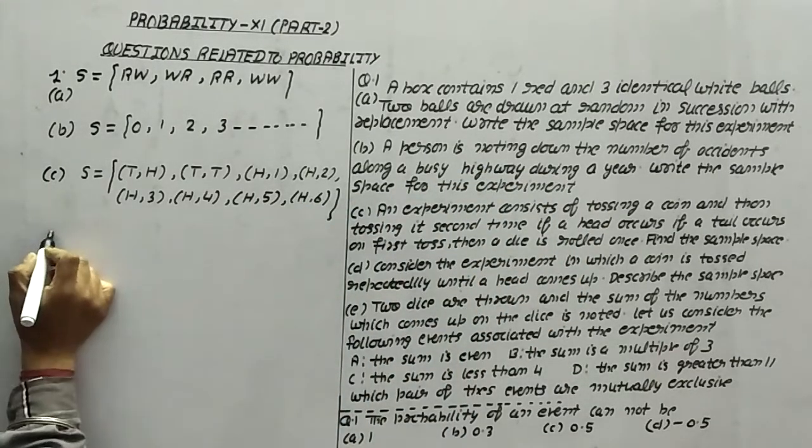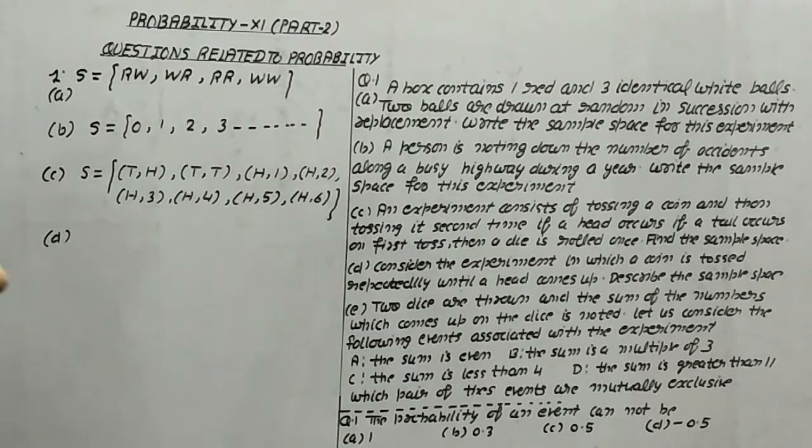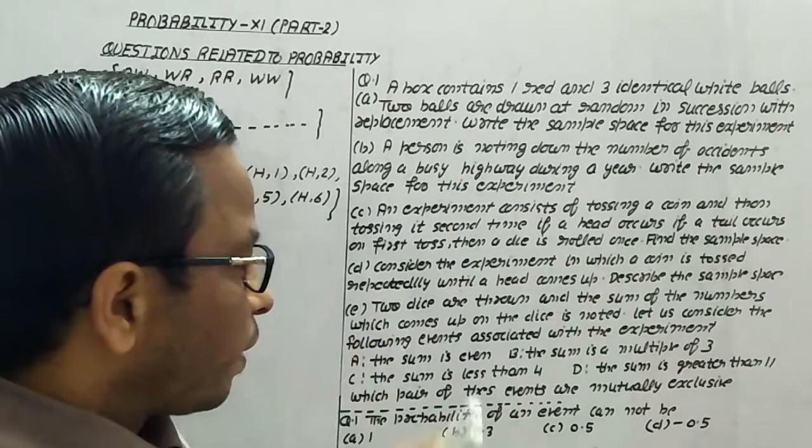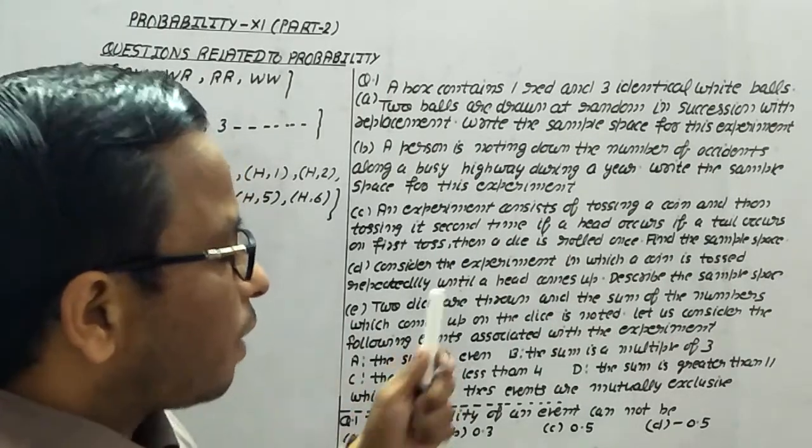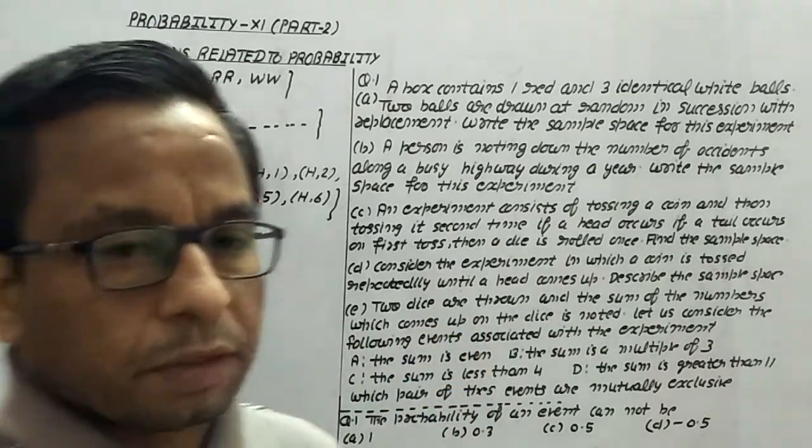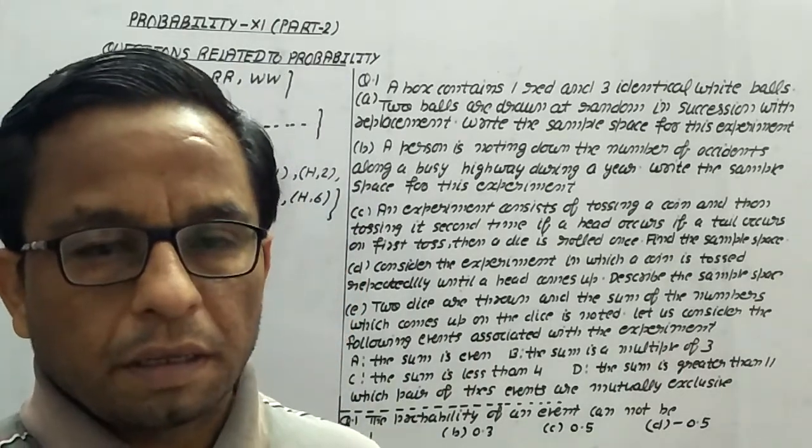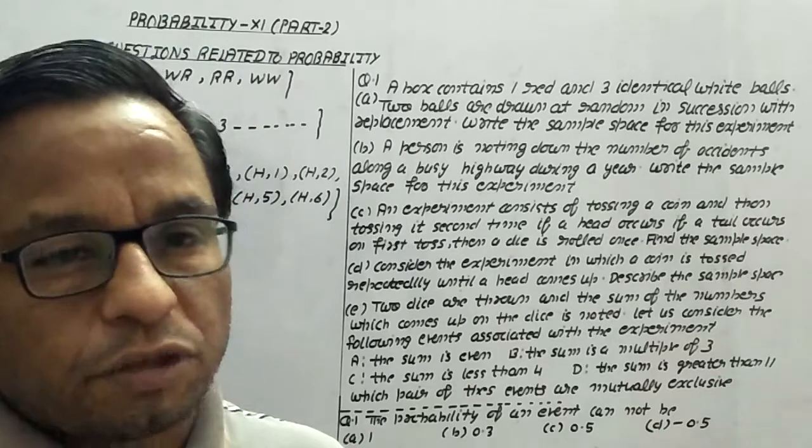In part D, consider the experiment in which a coin is tossed repeatedly until a head comes up. Describe the sample space. Till the head comes, the experiment is not over.